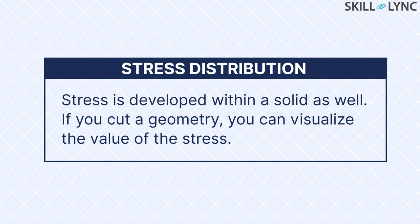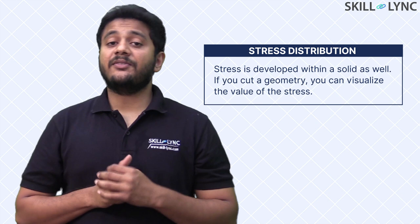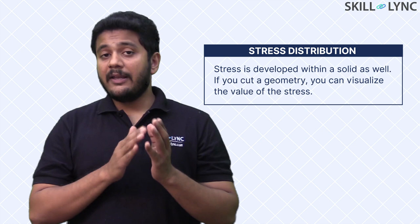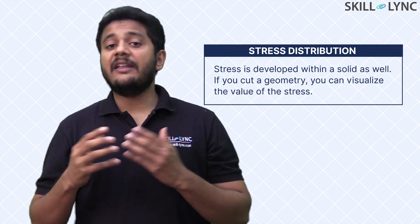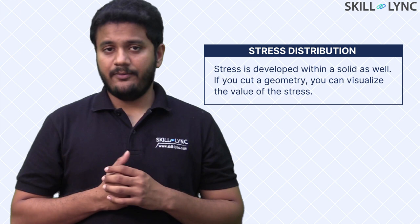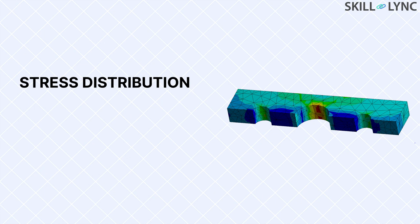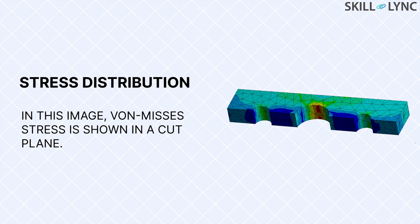Now while defining both normal and shear stress, we took examples where the load was applied on the boundary of the object. This makes a lot of sense because when you deal with any component, you apply load or torque on its exterior. However, a common misconception among students is to believe that stress develops only on the boundary or the surface. It is important to know that stresses are developed throughout the 3D object. You will not be able to see it unless you do some type of computer simulation where you can cut the 3D object and visualize the stress.